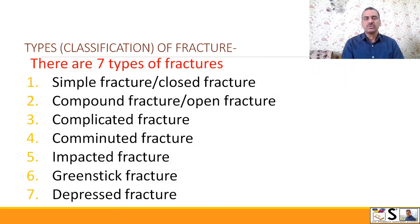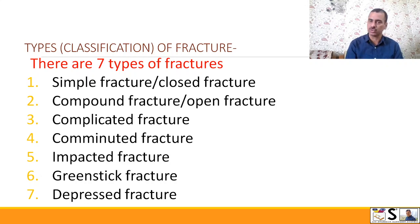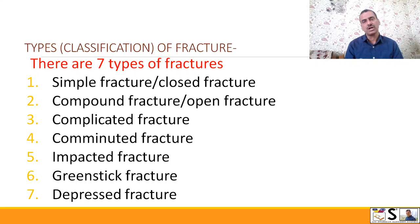Now we come to the classification of fracture. Fractures are classified into seven types: simple or closed fracture, compound fracture or open fracture, complicated fracture, comminuted fracture, impacted fracture, green stick fracture, and depressed fracture. We will discuss these seven fractures one by one.